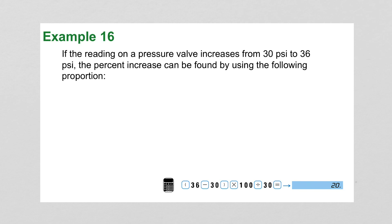Example 16 says if the reading on a pressure valve increases from 30 PSI to 36 PSI, the percent increase can be found using a proportion. So how much did we increase by? To find an increase we need a positive number so we're taking 36 minus the 30 over the original 30, and that will be our whatever rate we find over 100. So that once we subtract we've got 6 over 30 equals R over 100. So 30R equals 600 or R is 20 percent. So this pressure valve increased by 20 percent.